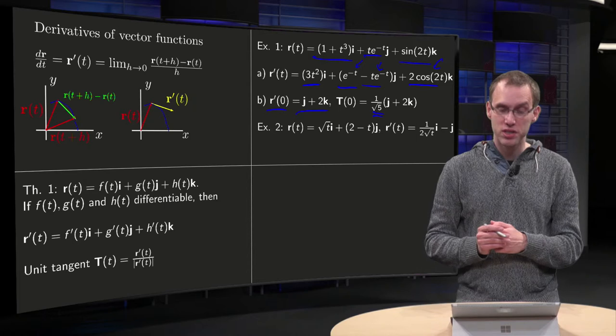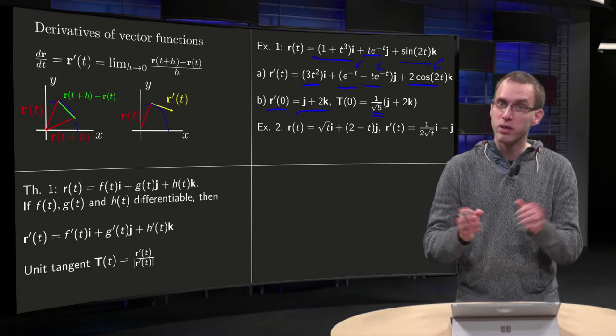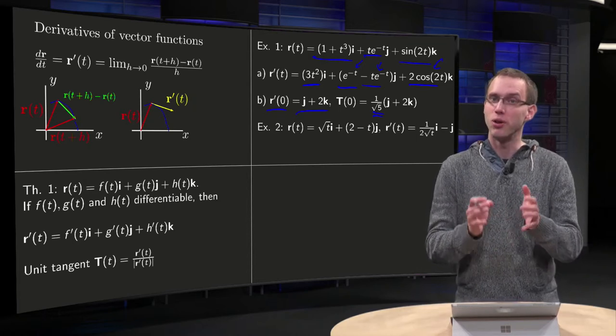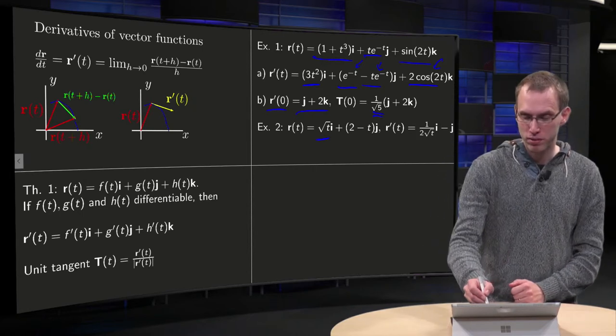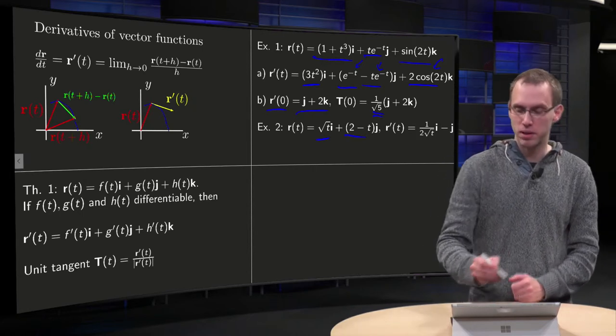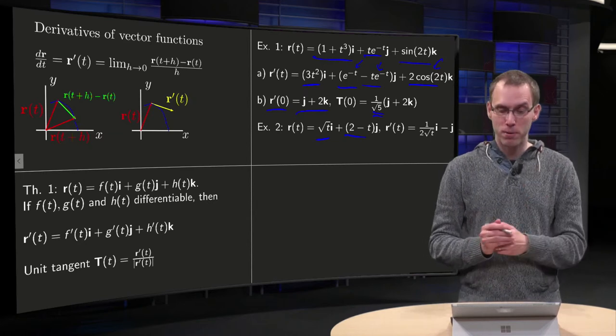And take some second example, but now in R², because we want to be able to sketch it, which is a lot easier in R² than in R³. If you take for example √t i + (2-t)j, then your r' will give you